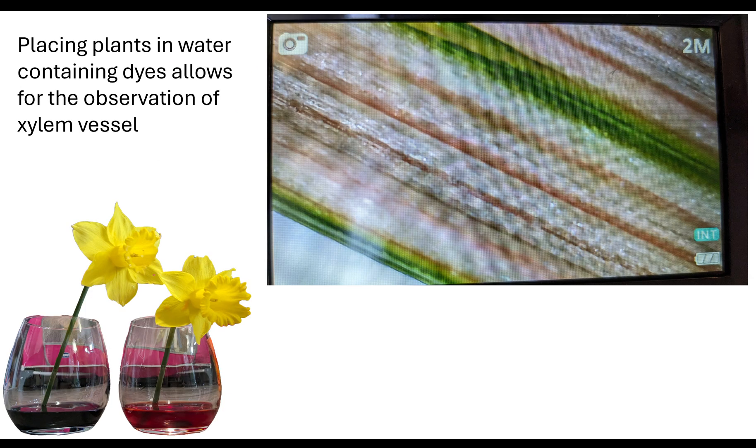So how do we know what the xylem vessel looks like? How can we observe it? One of the practical skills that you are expected to know is that if you were to take a plant that has a flower or some leaves above, you can do this with celery or daffodils, what you do is you place the plant in water containing these dyes. I used red and blue coloured dye. I left it a good two to three hours before the dye was able to move up. Normally you would leave it for about 24 hours.